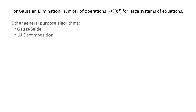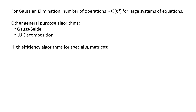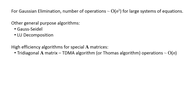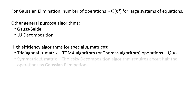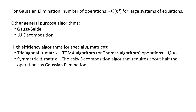There are other general-purpose algorithms for solving systems of linear algebraic equations, including the Gauss-Seidel method and LU decomposition, both of which have pros and cons compared to Gaussian elimination. If the A matrix has a special structure, algorithms can exploit this to solve much faster. For a tridiagonal matrix, the TDMA or Thomas algorithm can be employed, with operations growing only as the first power of the number of equations — a very large savings in computational time. If a matrix is symmetric about the diagonal, the Cholesky decomposition algorithm can be implemented, requiring about half the operations of Gaussian elimination.